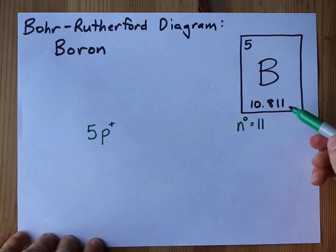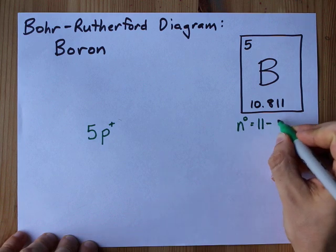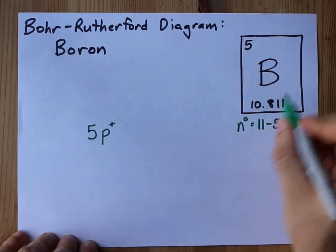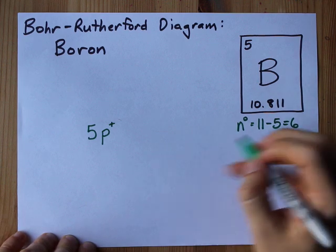It's the mass number, by the way. It's the combination of neutrons and protons. And you take away how many protons there are, 11 minus 5 gives us 6 neutrons total.